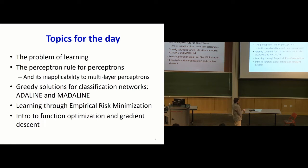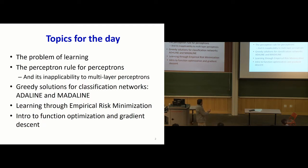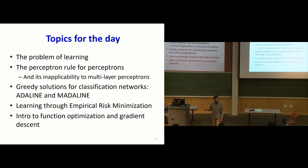Today specifically, we're going to look at the perceptron rule for perceptrons and why you can't just use it for multi-layer perceptrons. The slides contain information on Adeline and Madeline, which are greedy algorithms to learn multi-layer perceptrons — you will have to look these things up on the slides, but I won't have time to go over them in class. Then we'll look at empirical risk minimization and, time permitting, function optimization and gradient descent.